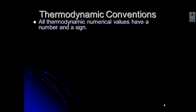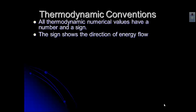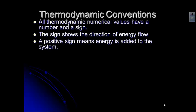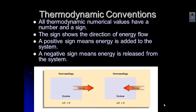All thermodynamic numbers have a number and a sign. The number shows how big whatever we're measuring is, and the sign tells us the direction of energy flow — is it coming from the surroundings to the system, or from the system to the surroundings? A positive sign means we're adding energy to the system, and a negative sign means we are releasing energy from the system.